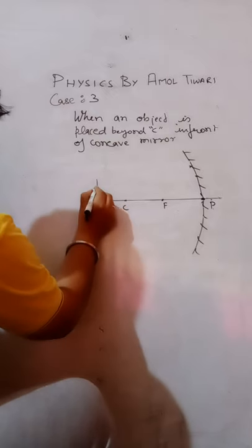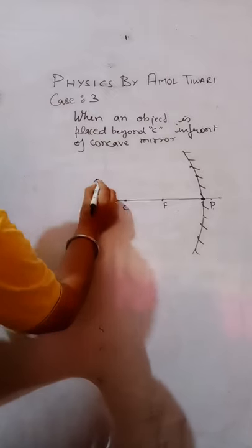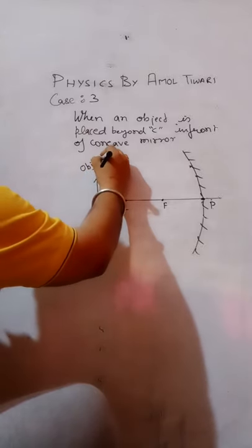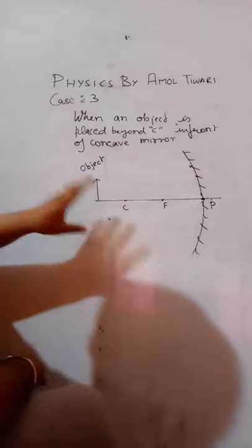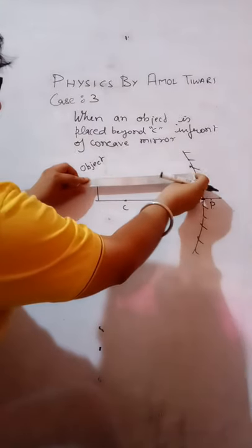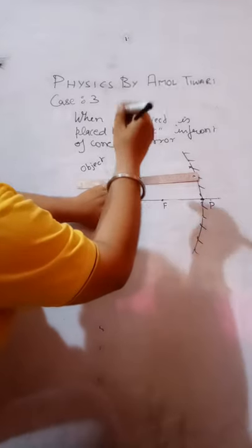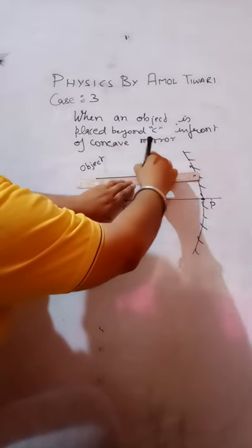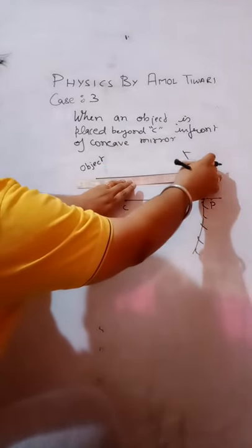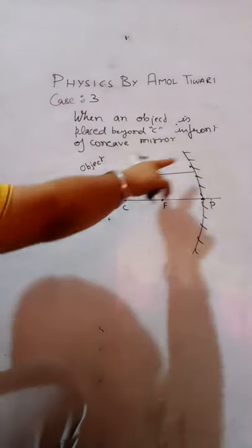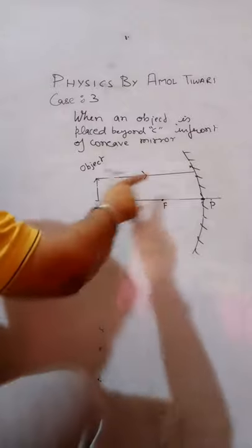So suppose an object is placed like this. If the object is placed beyond center of curvature, first of all a light ray parallel to the principal axis. You will have to make an arrow so that it will look like the incident light ray.